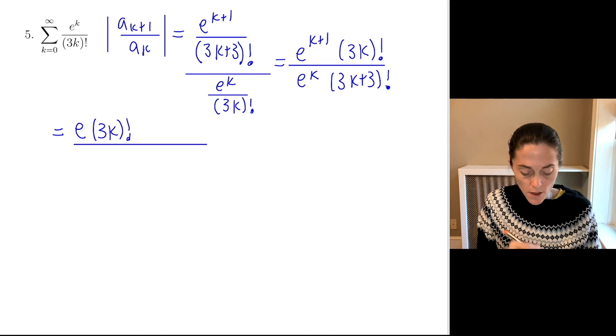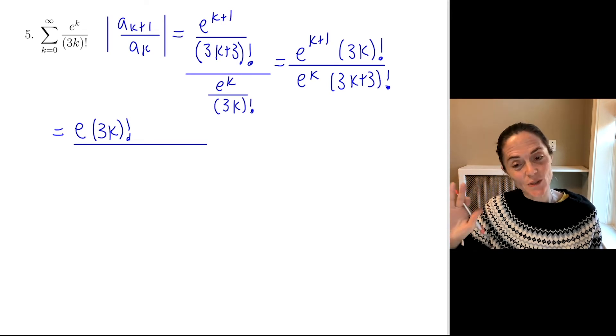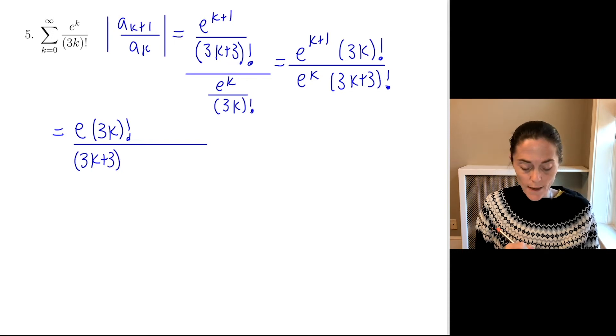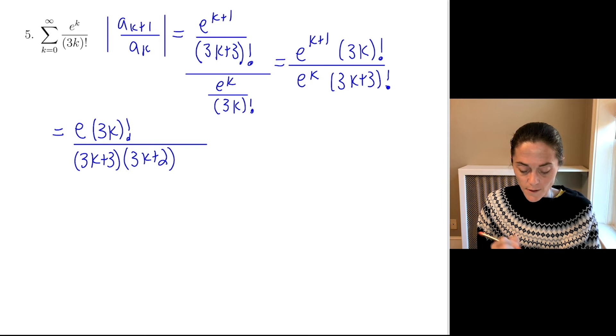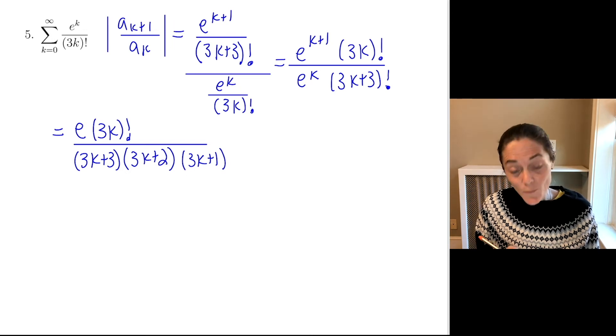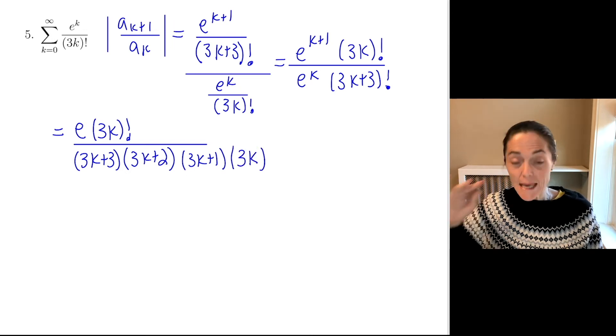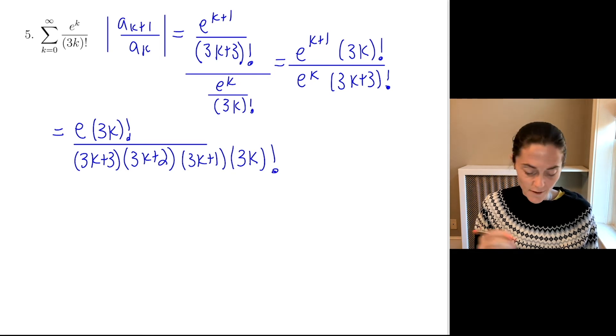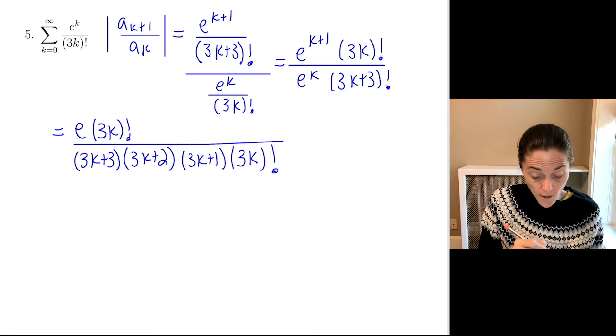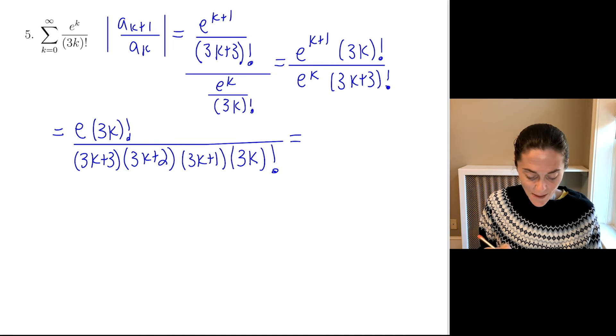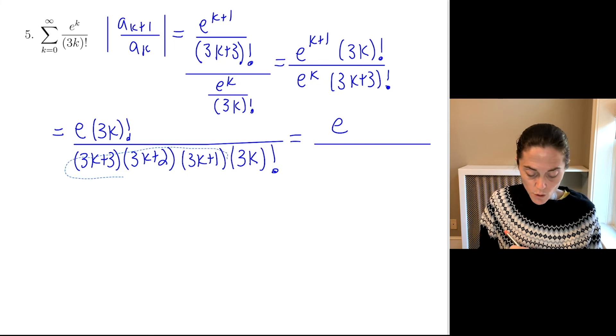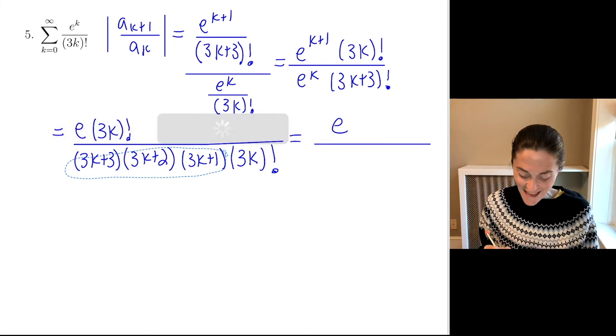Now, we have to be a little bit careful with how we can cancel off these factorials. So, 3k plus 3 factorial, we have 3k plus 3, march back 1, we have 3k plus 2, march back 1 again, we have 3k plus 1, march back 1 again, then we will have a 3k. And so what's left, if we keep marching back 1, we will have a 3k factorial. Now we can see how to cancel all of this off. That's why I needed to write a little bit here. What I'm left with, absolute value a_{k+1} over a_k is e divided by this product of these three terms, 3k plus 3, 3k plus 2, 3k plus 1.